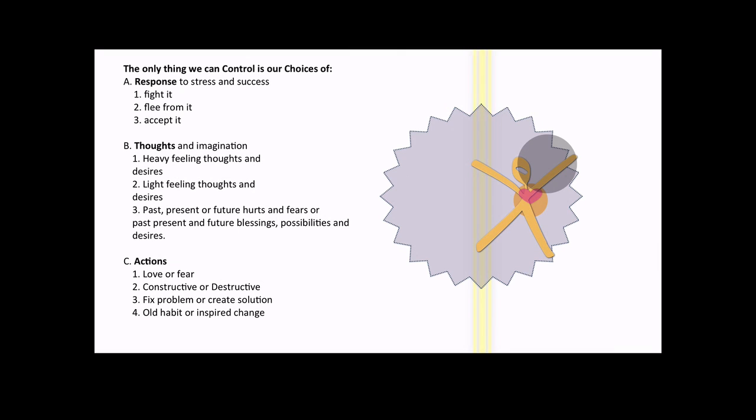And one of the things you can do differently is decide right now to control only the things you can control. And the most important thing to control is your choice. Your choice of responses to stress and success, your choices of thoughts and where you're going to dwell in your imagination, and your choices of actions, when you're going to take them, when you're going to take an outside action or an inside action. These are three things we can control.